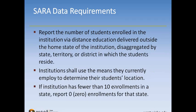The actual reporting requirements are to report the number of students enrolled via distance education delivered outside the home state, disaggregated by state, territory, or district in which the students reside. Institutions can use the means they are currently using to determine the student's location. SARA has consistently said that however you are currently gathering this information to report to IPEDS is the exact same way they anticipate you'll report for SARA. For privacy protection, if there are fewer than 10 enrollments in a state, you would report zero for that state.